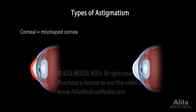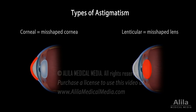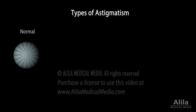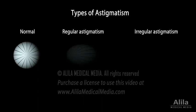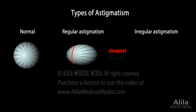Astigmatism is classified as corneal or lenticular, depending on the structure that is misshaped. It is also specified as regular or irregular. Regular astigmatism is when the principal meridians — the steepest and flattest curves — are perpendicular to each other.